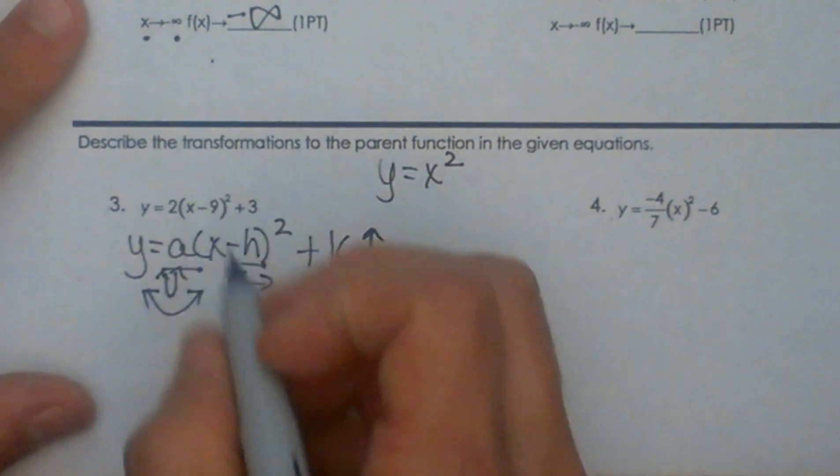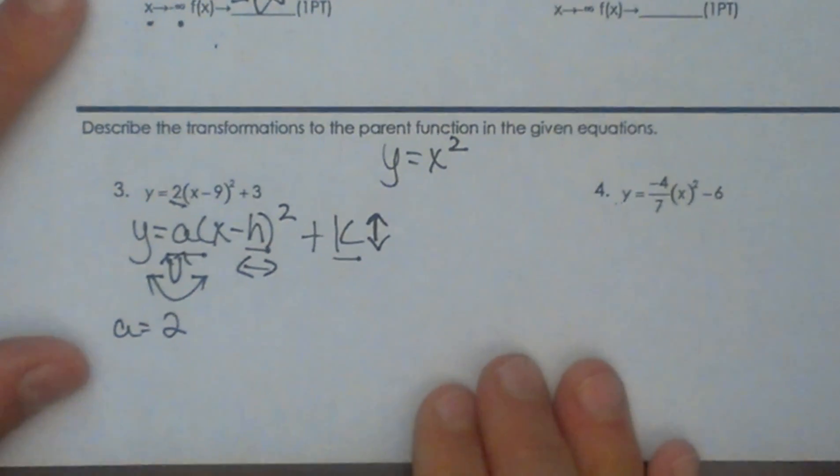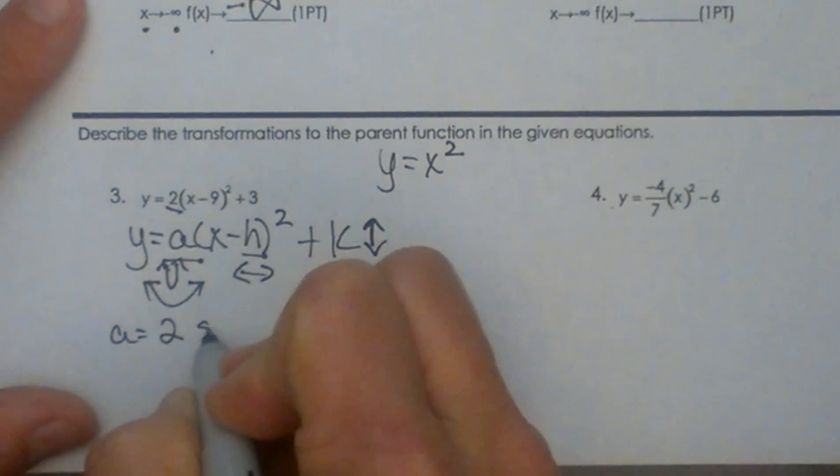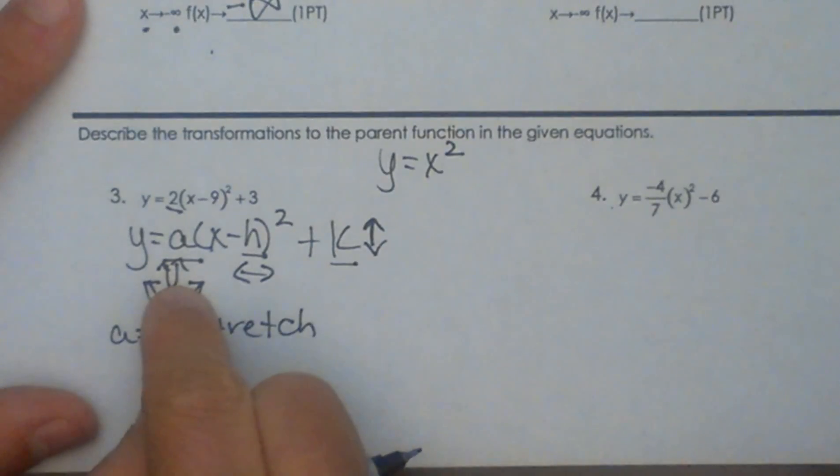So let's look at what we have here. In this case, a is 2. So if you have a value of 2, that means we are going to have a stretch of 2. It's going to make it taller and skinnier.